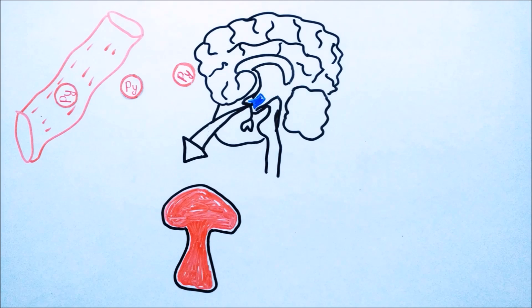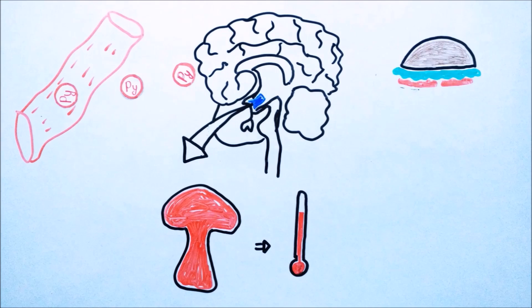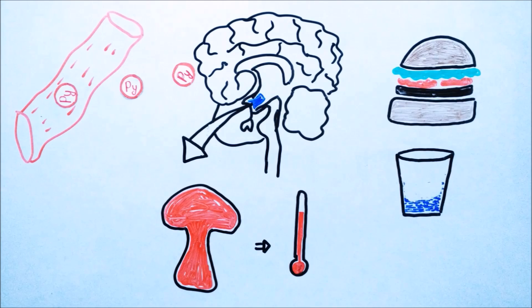These chemicals are then carried by blood through the part of the brain known as hypothalamus which regulates body temperature along with many other tasks like controlling hunger, thirst, sleep, etc.